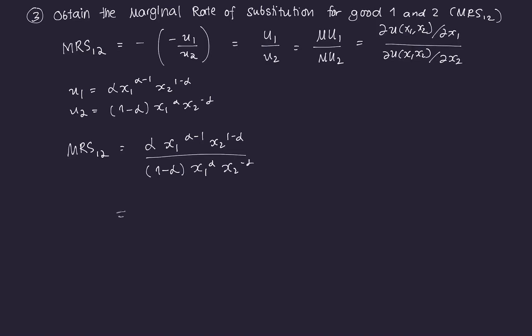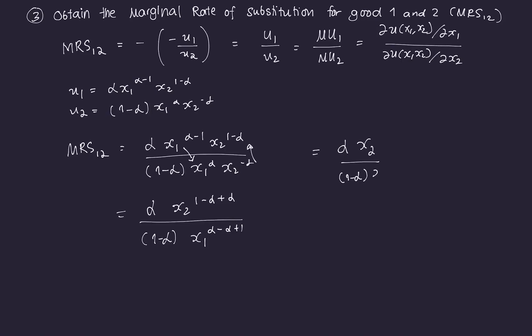We can simplify further. Bringing X1^(α−1) divided by X1^α gives X1^(−1), and X2^(1−α) divided by X2^(−α) gives X2^(1−α+α) = X2^1. So the expression simplifies to MRS₁₂ = (α · X2) / ((1−α) · X1). That's the marginal rate of substitution for the Cobb-Douglas utility function U = X1^α · X2^(1−α). Those are the first three parts of the utility maximization process.